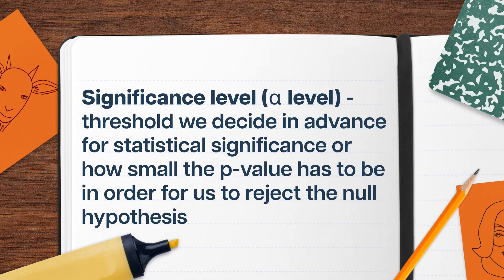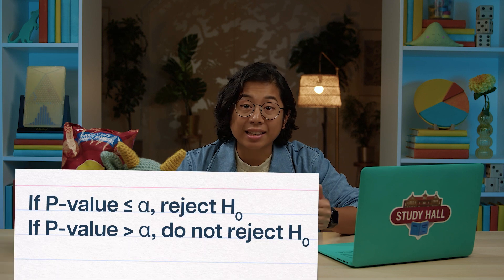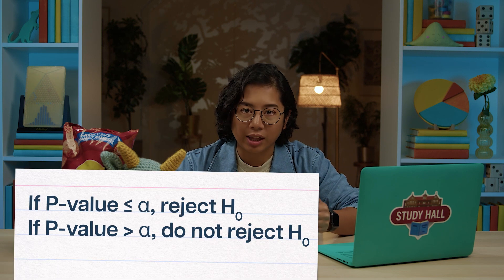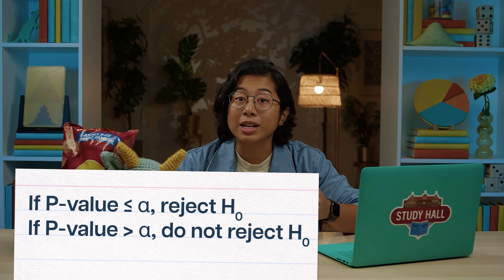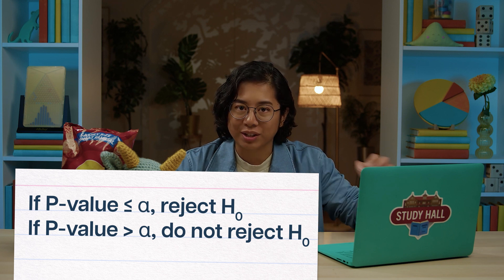To make a decision, we often have a cutoff p-value in mind. Before we start collecting data, we decide how unlikely something would have to be for us to consider it too unlikely. That cutoff probability is called the significance level, or the alpha level, and we usually use values like 5% or 1%. If the p-value we get from our test is less than our alpha level, we reject the null hypothesis. If our p-value is greater than our alpha level, we fail to reject the null hypothesis.